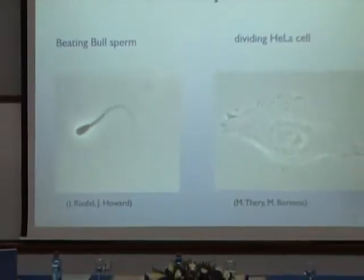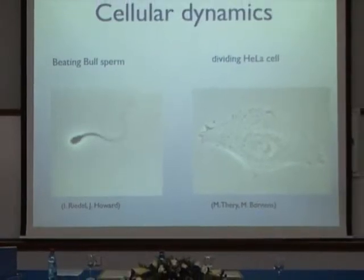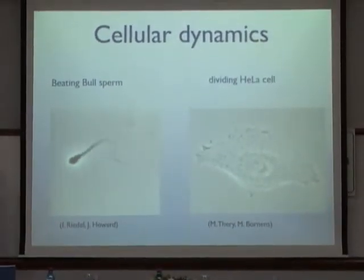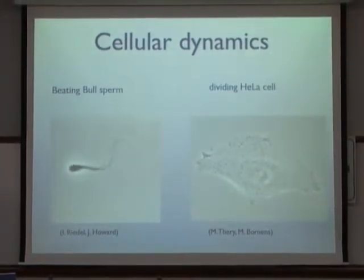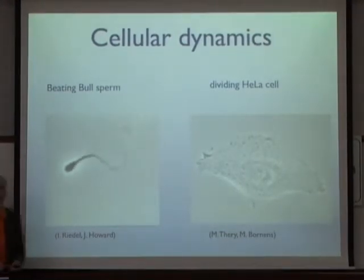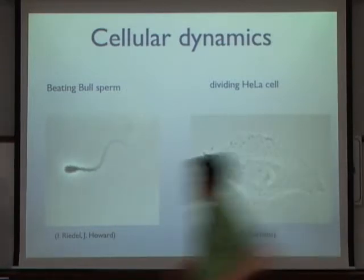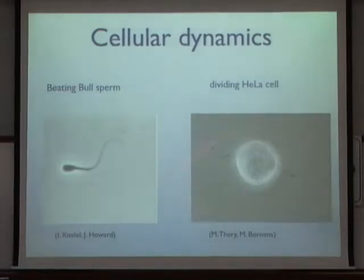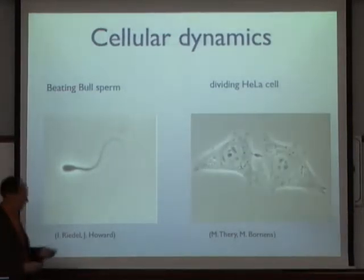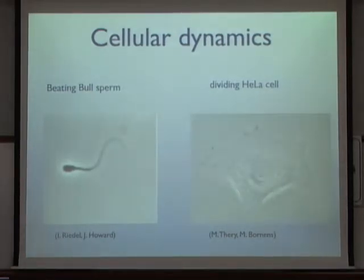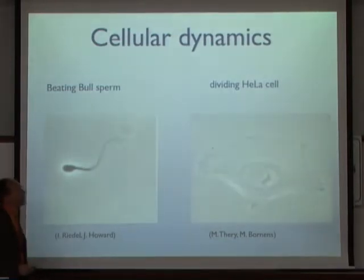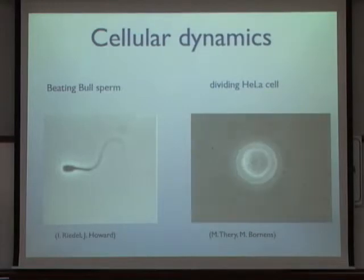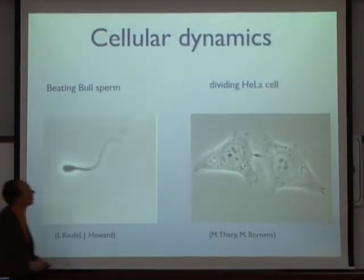The first example is cell motility of a sperm driven by a flagellum. This flagellar structure is inherently active and can spontaneously generate wave-like movements that in a fluid propel the sperm. Another example is a cultured cell which divides — it's very dynamic; you can see ruffles, then the cell rounds up, and in that rounded state it undergoes division, and the two daughter cells live happily afterwards.